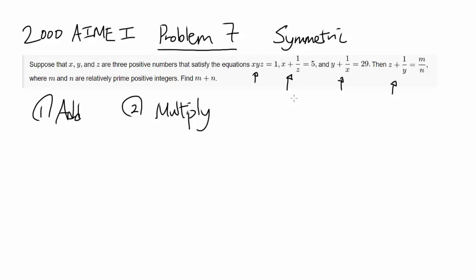So obviously these three equations look most symmetric, so let's add them up. So we have x plus y plus z plus 1 over x plus 1 over y plus 1 over z being equal to 5 plus 29, which is 34, plus m over n. Let's let m over n be some random number. We can let it be a. So 34 plus a.